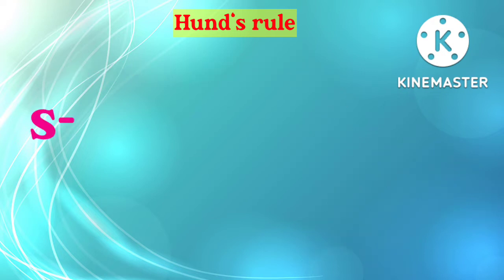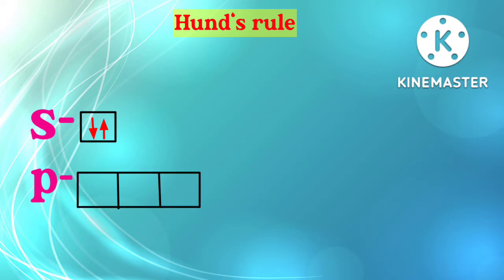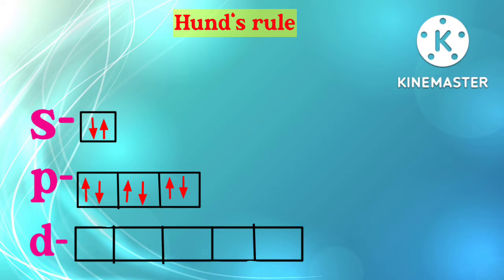Now an important thing: S has 1 orbital and 1 orbital contains 2 electrons, so it can fill 2 electrons in the S orbital. Next, the P orbital has 3 subshells and each subshell contains 2 electrons, so a maximum of 6 electrons can be filled in the P orbital. Next, the D orbital has 5 subshells and each subshell contains 2 electrons, so a maximum of 10 electrons can be filled in the D orbital.